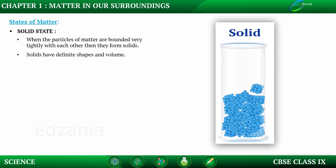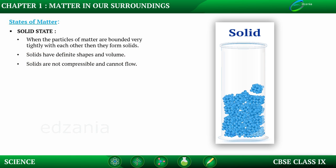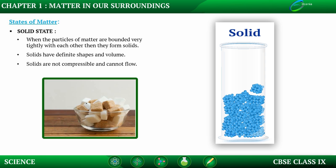What are the properties of solid state? Solids have definite shapes and volume — that is, they have a well-defined boundary. Solids are not compressible and cannot flow, since the particles of solid matter are bounded very tightly and are not free to move. The microscopic view of the arrangement of particles in solid state shows that particles are bounded very tightly with each other and don't have enough space in between them.